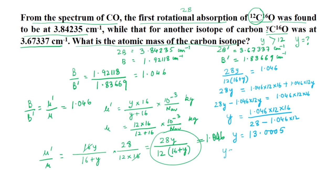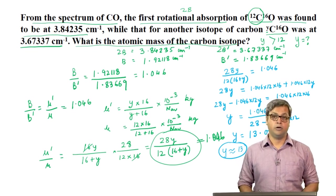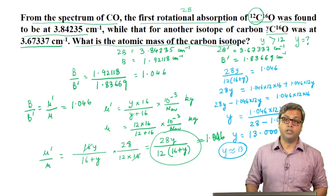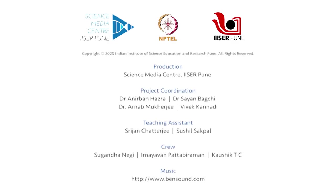So we can write approximately Y is 13 — we are talking about the ¹³C isotope. From this we can find that the atomic weight of ¹³C is 13.0005 from experimental data. This is within 0.02 percent of the best value obtained in other ways. In other words, the decreased separation observed for isotopes allows us to evaluate precisely the atomic weights of the isotopes.